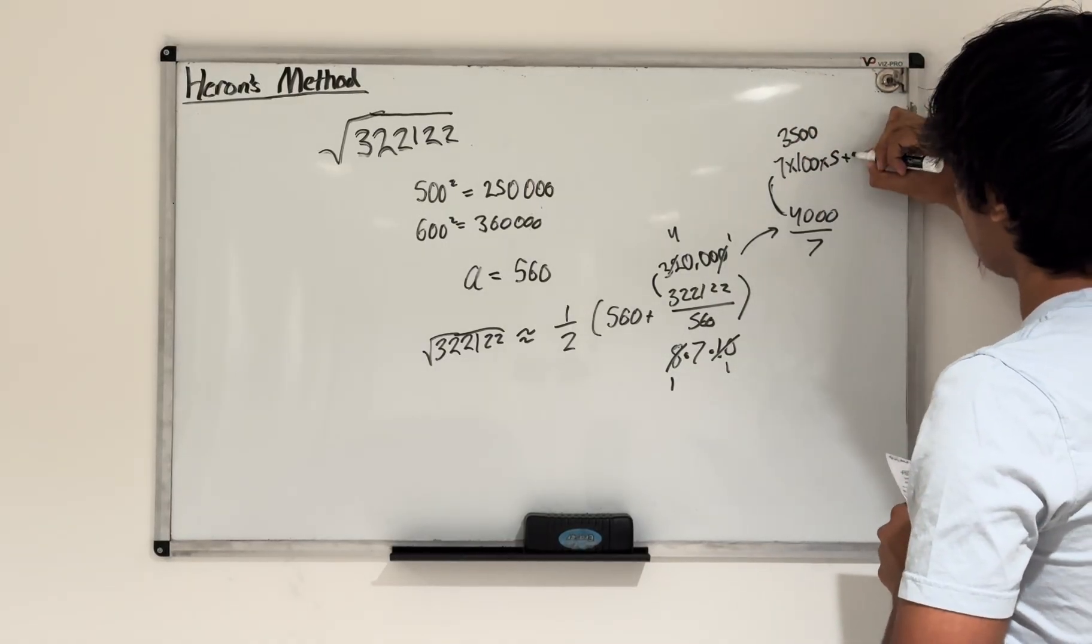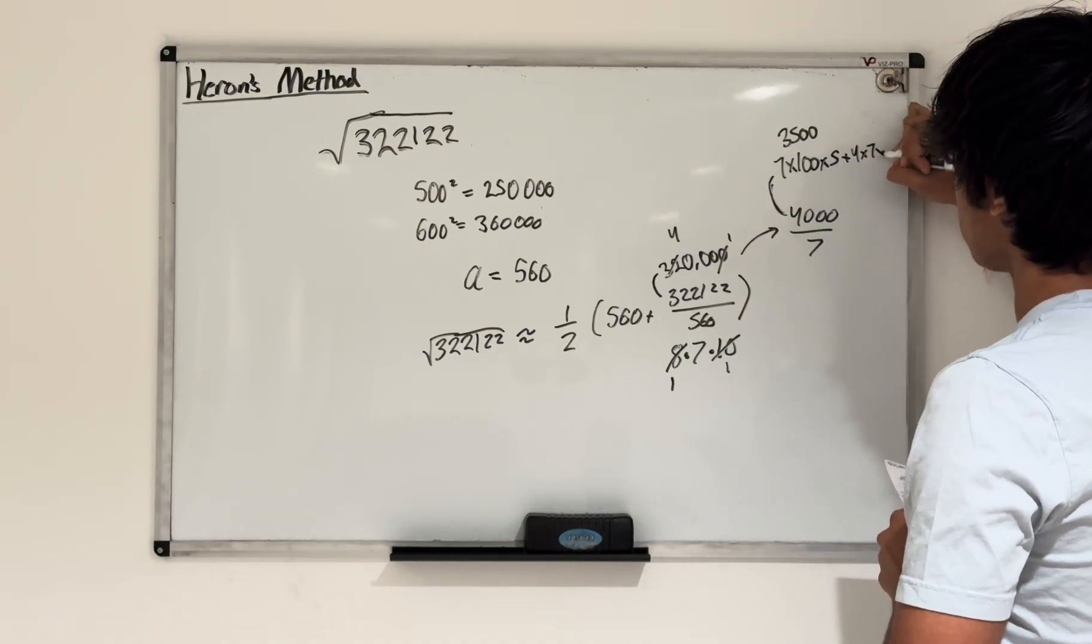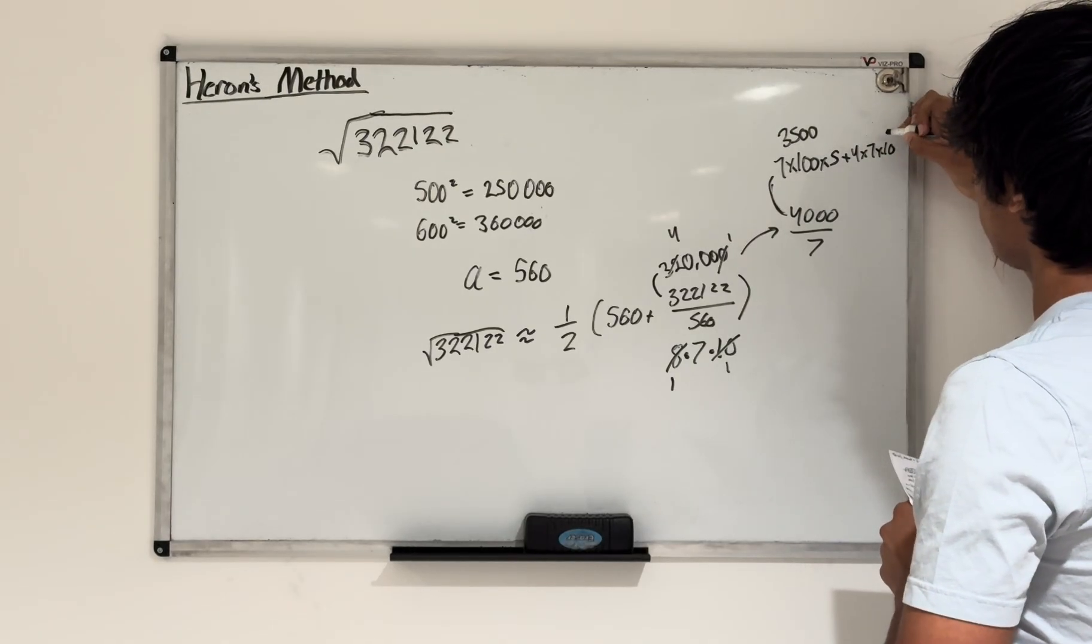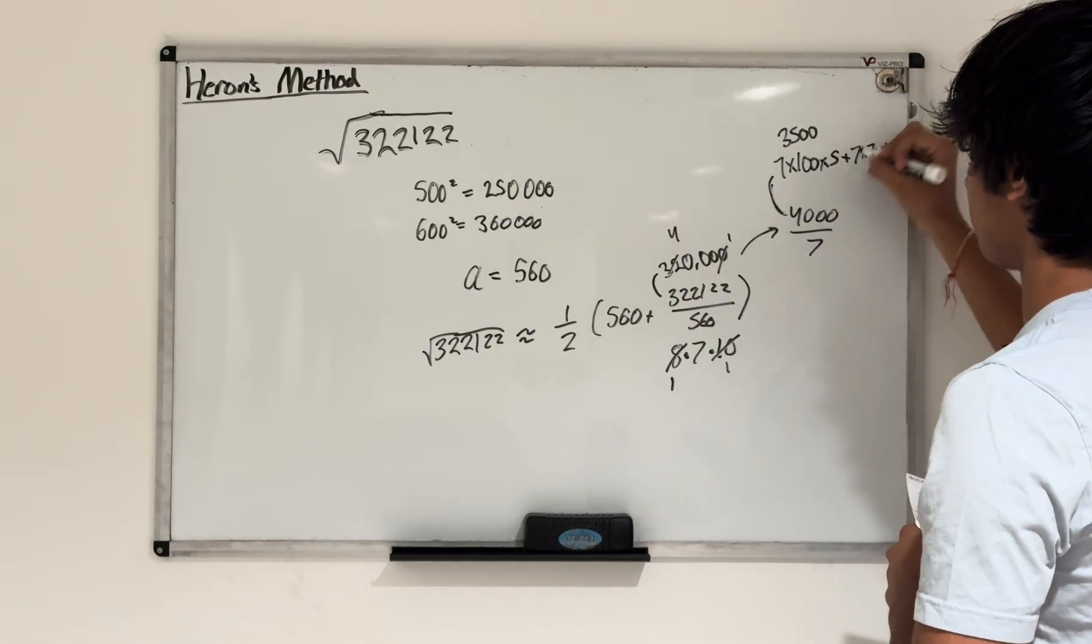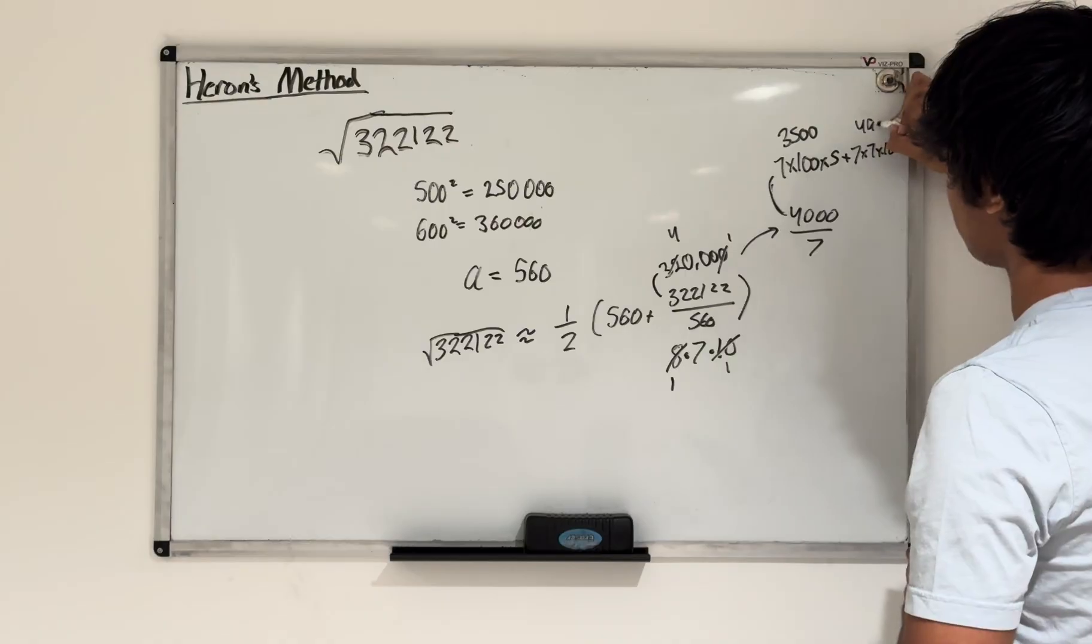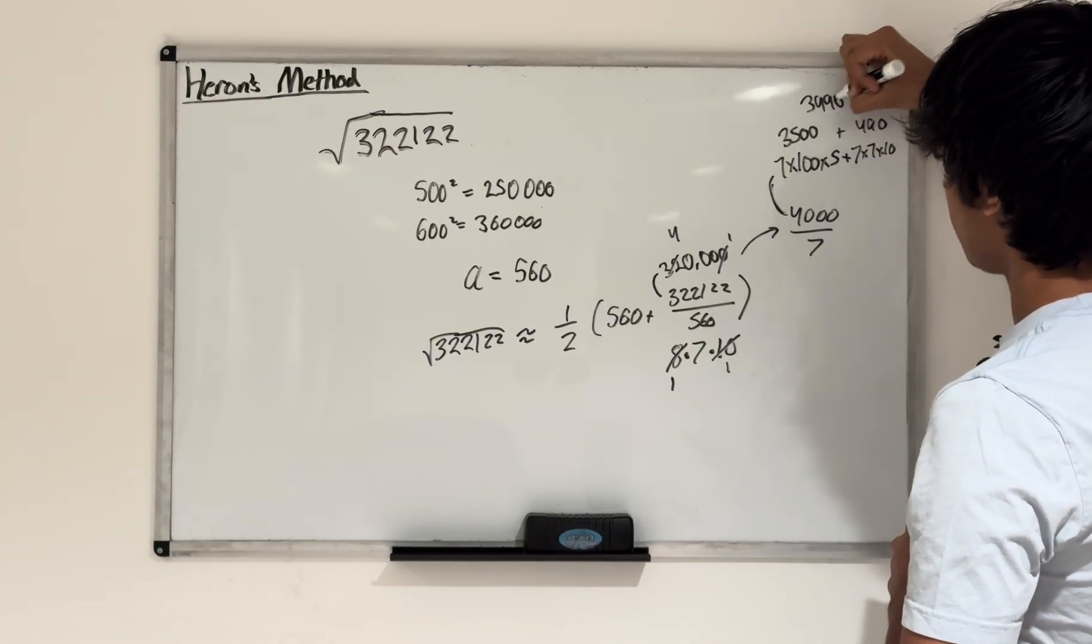Then I can add 7 times 7 times 10, that gives you 490. If you add this together, you're going to get 3,990. Therefore, this value is approximately equal to...